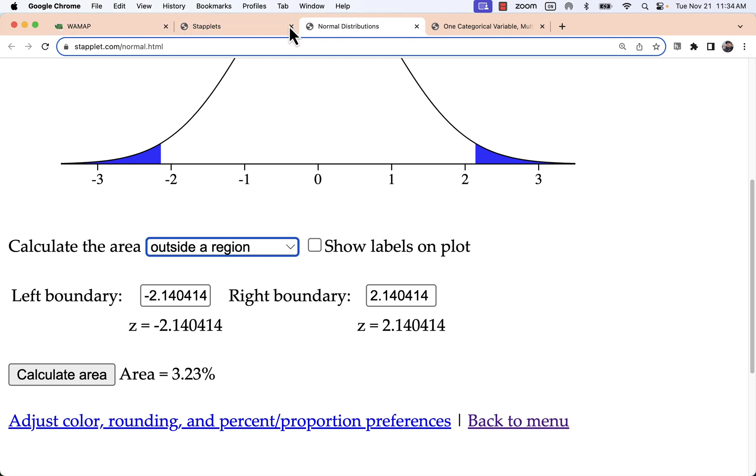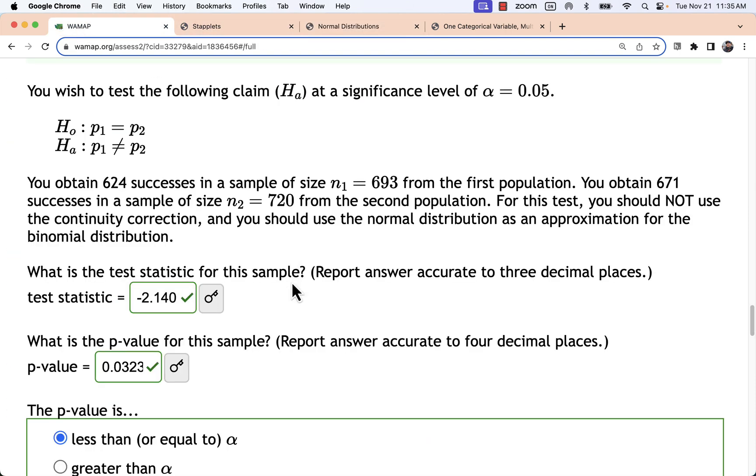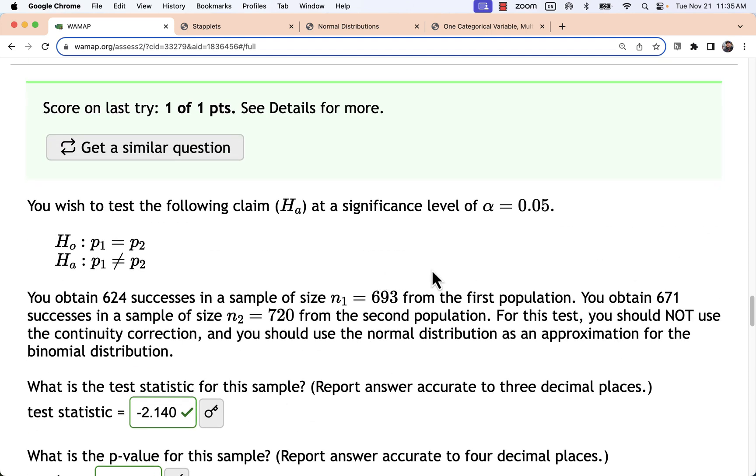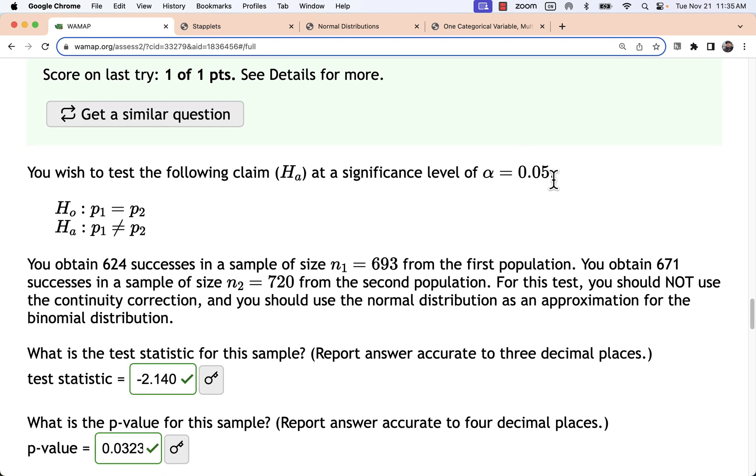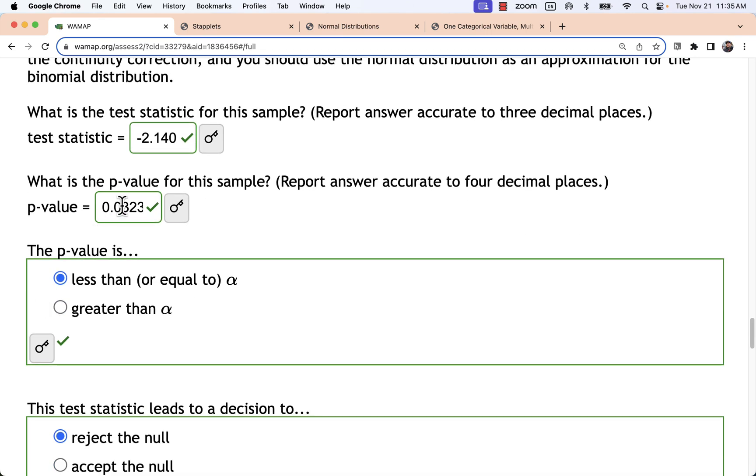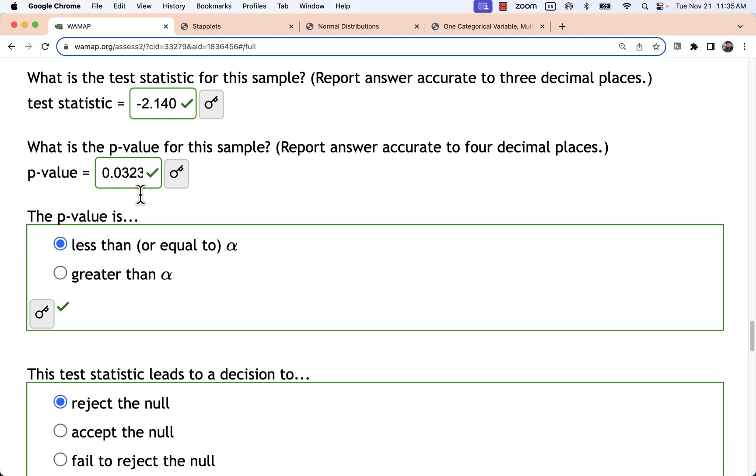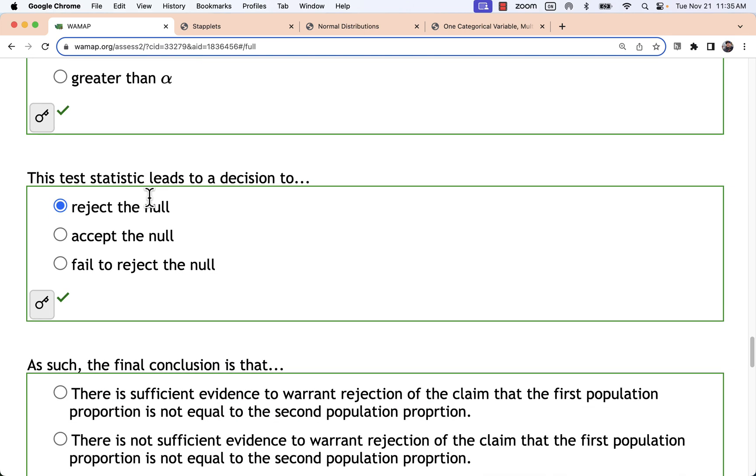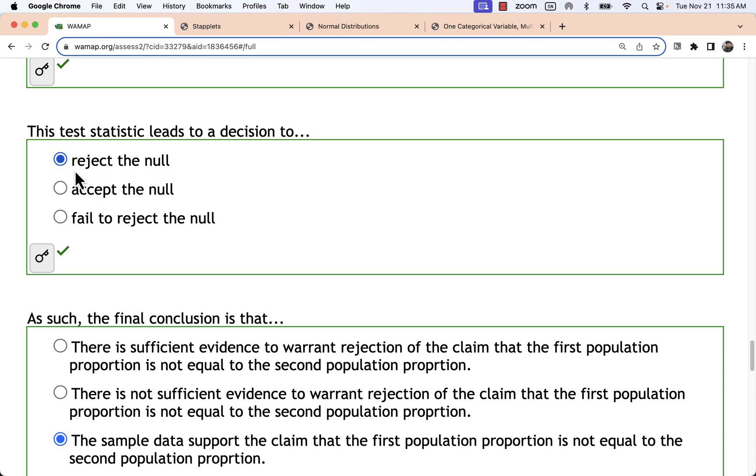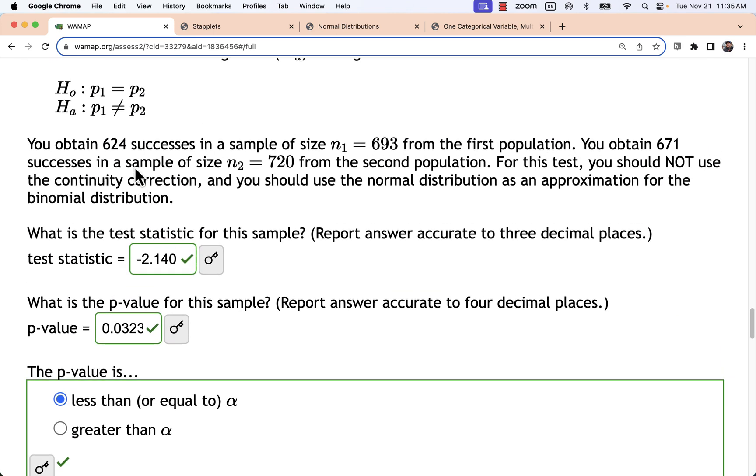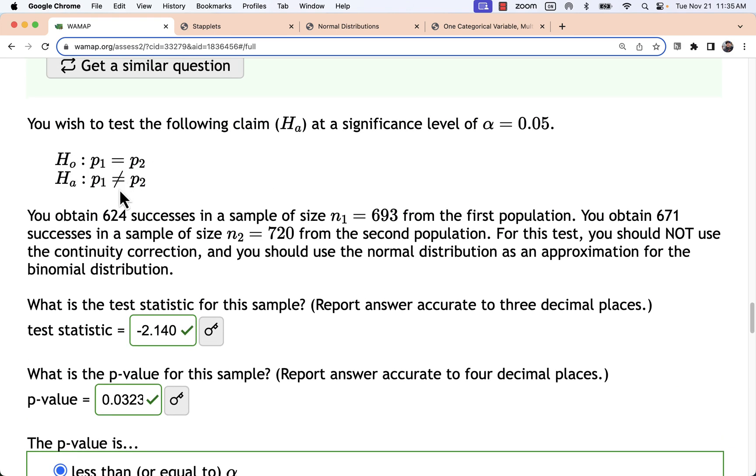Going back to my problem. I entered in my test statistic and p value. I was comparing to an alpha of 0.05. My p value is smaller so this is a significant result. I've got sufficient evidence here. I'm rejecting the null hypothesis. So I'm rejecting that they're equal and saying that they look like they're not equal.